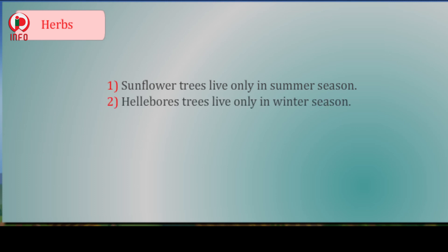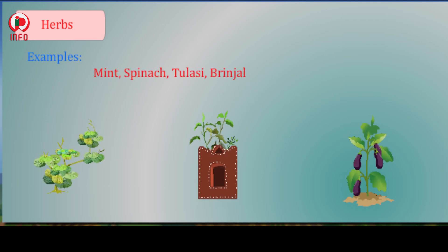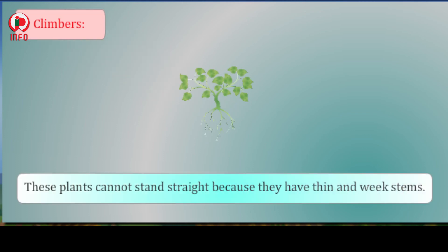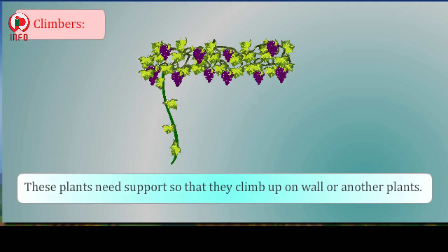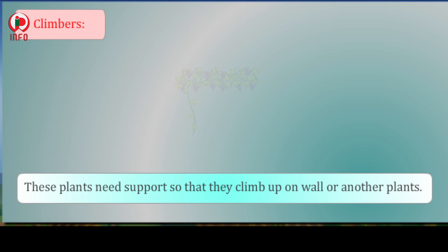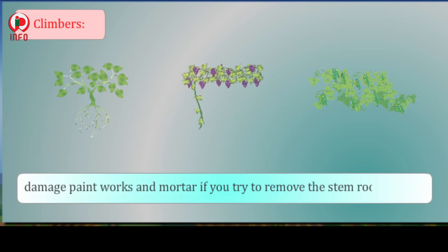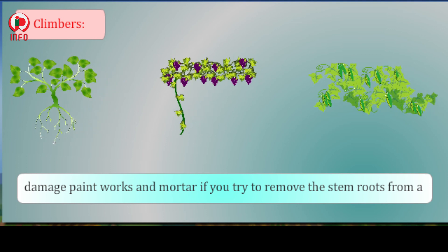Climbers: These plants cannot stand straight because they have thin and weak stems. These plants need support so that they climb up on a wall or another plant. Examples: beans, money plants, grapevine, pea plant. These plants can damage paintwork and mortar if you try to remove the stem roots from a structure.